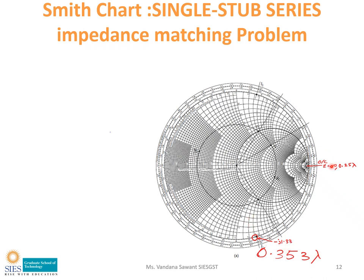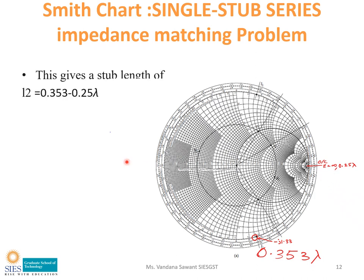The stub is an open circuit stub. To find L2, measure the distance from the open circuit end. The open circuit point is at 0.25 lambda. So L2 equals 0.358 lambda minus 0.25 lambda, which equals 0.103 lambda. The stub length L2 is 0.103 lambda.